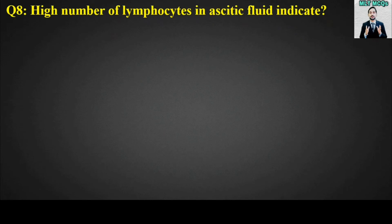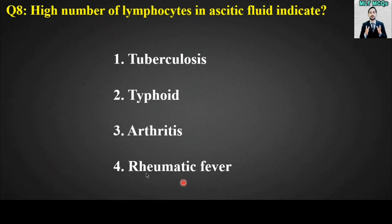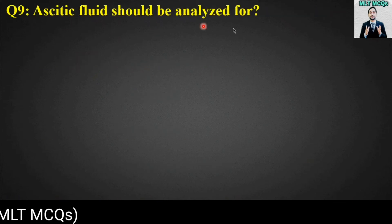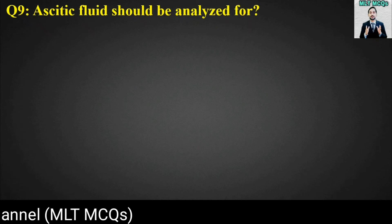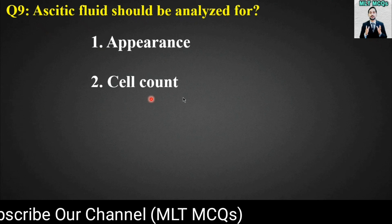tuberculosis, typhoid, arthritis, or rheumatic fever. The right answer for this MCQ is option number one: high number of lymphocytes in ascitic fluid indicate tuberculosis. Last MCQ is: ascitic fluid should be analyzed for — options are: appearance, cell count, serum ascitic albumin gradient, or all of the above.